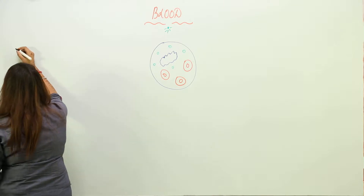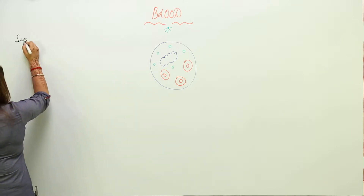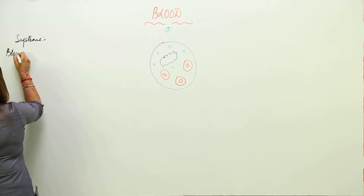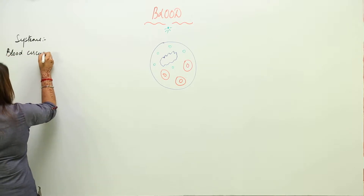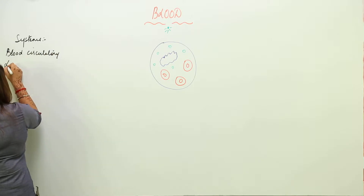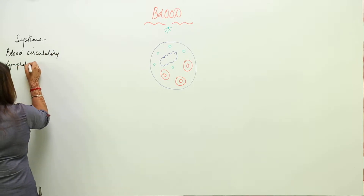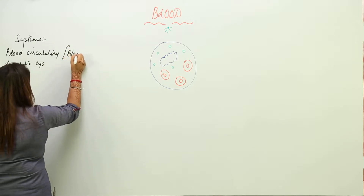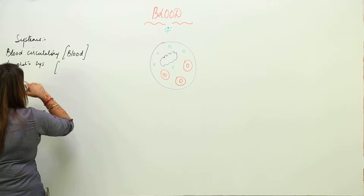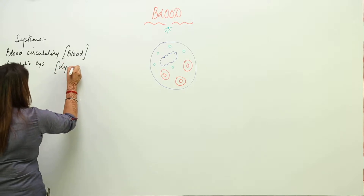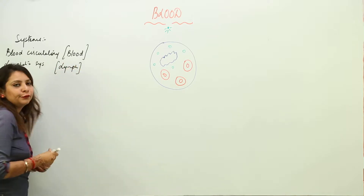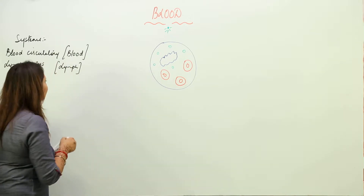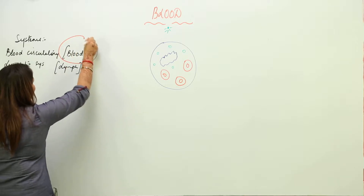There are two systems involved in circulation. One is the blood circulatory system, and the other is the lymphatic system. In the blood circulatory system, the fluid that transports things is blood, and in the lymphatic system, the fluid which transports substances is lymph. We are going to start with the blood circulatory system.